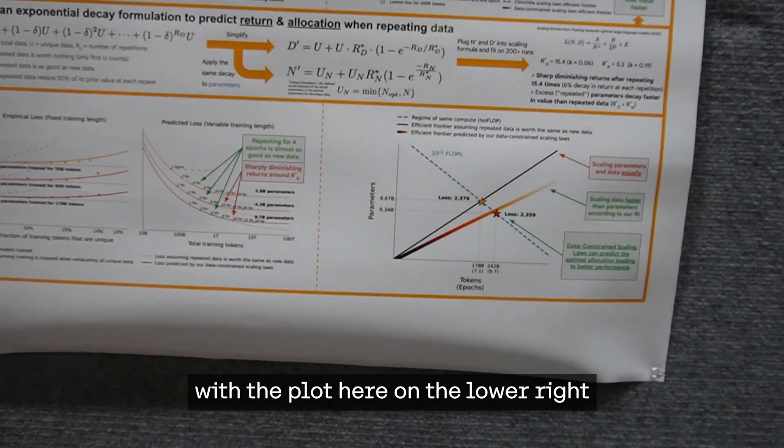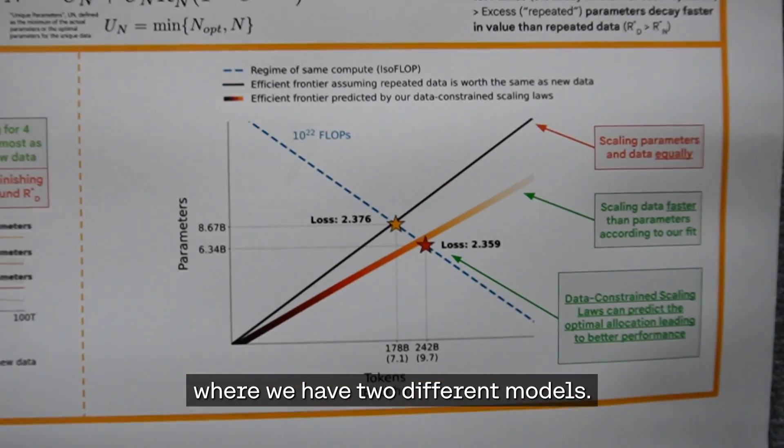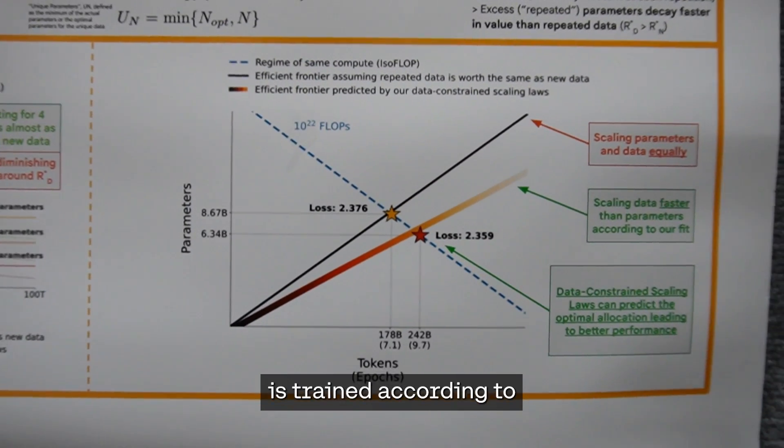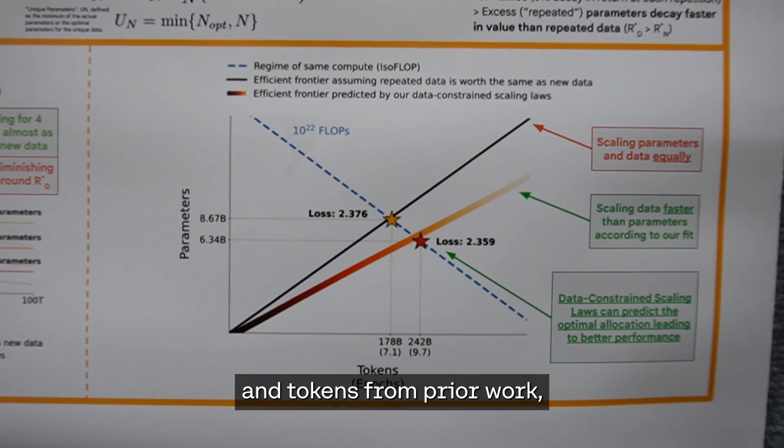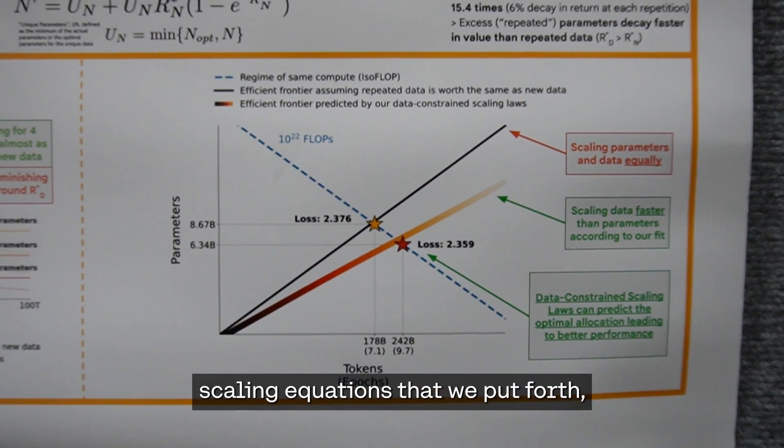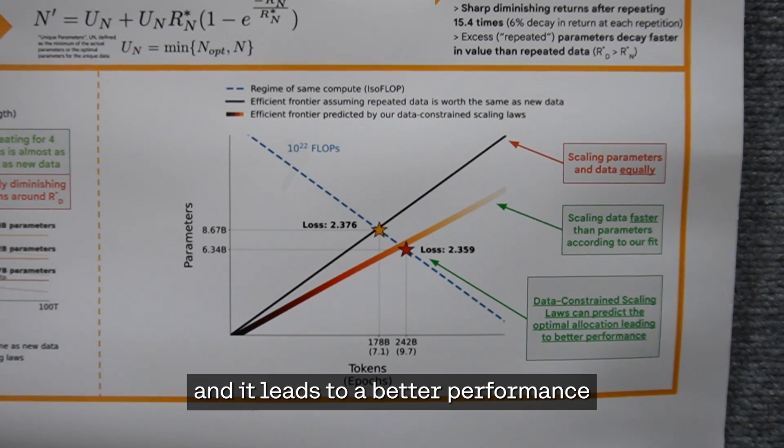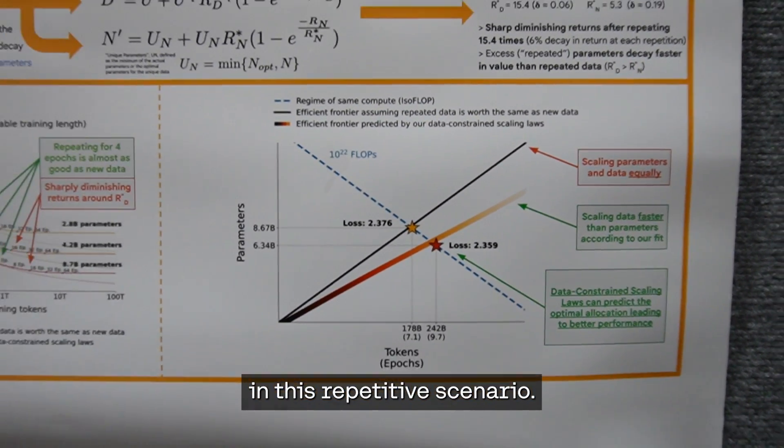I want to finish off with the plot on the lower right, where we have two different models. The one on the top is trained according to equal scaling of parameters and tokens from prior work, whereas the one on the bottom is trained according to scaling equations that we put forth, and it leads to better performance in this repetitive scenario.